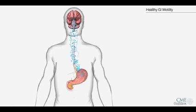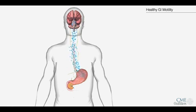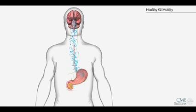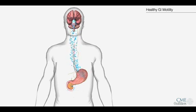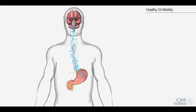Ghrelin is produced mainly by the stomach. Ghrelin travels in three different ways. One: through spreading locally in the stomach to engage with receptors along the stomach wall.